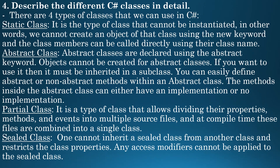Next question: describe the different C-Sharp classes in detail. There are four types of classes that we can use in C-Sharp. First is static class — it is a type of class that cannot be instantiated. We cannot create an object of the class using the new keyword, and the class members can be called directly using their class name.